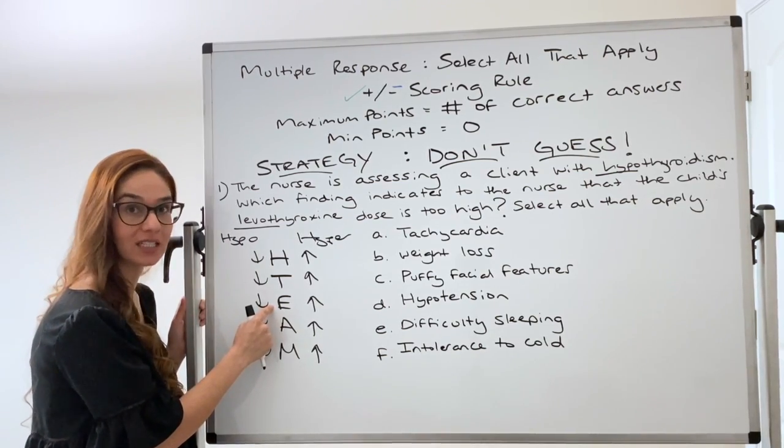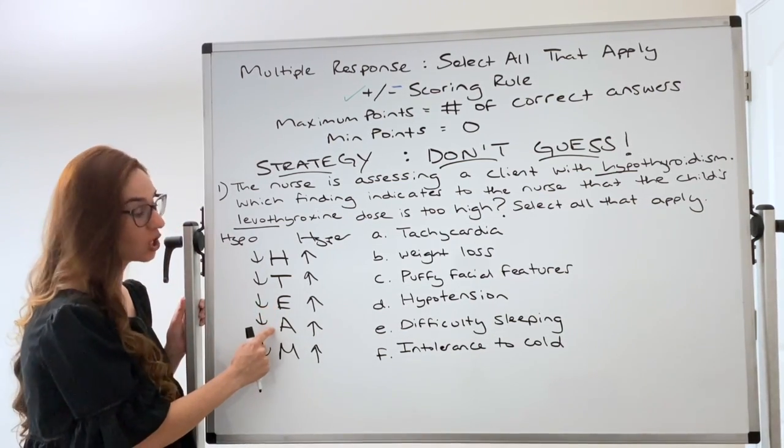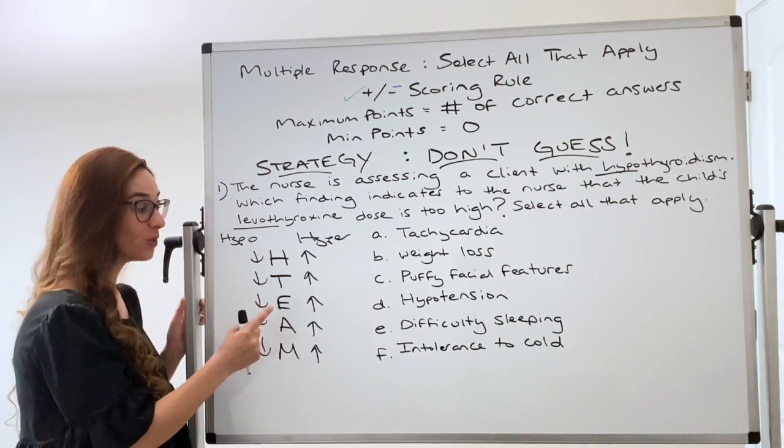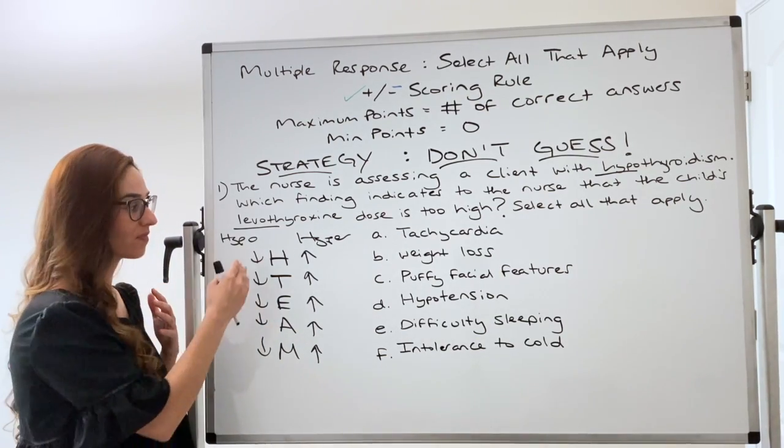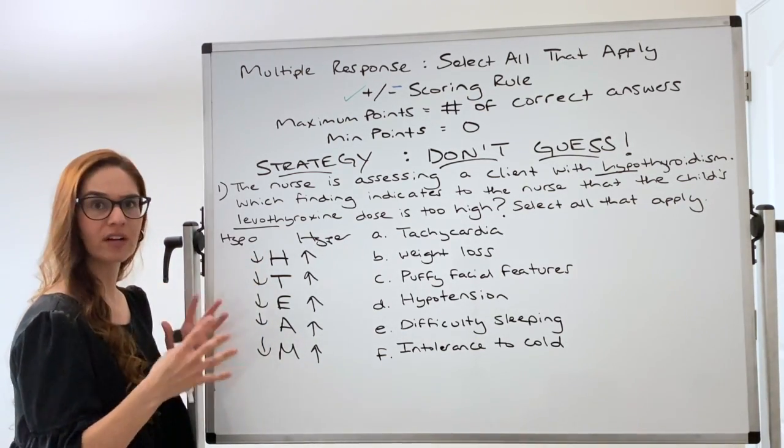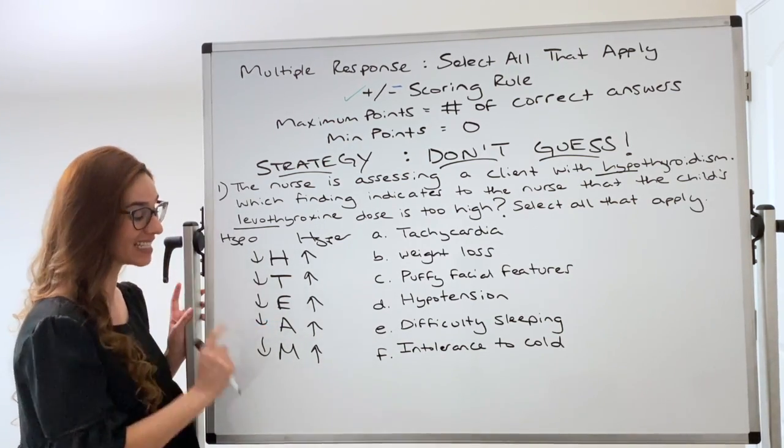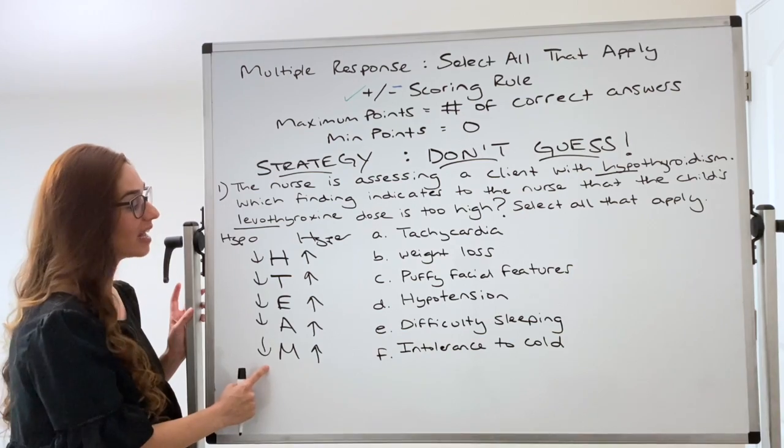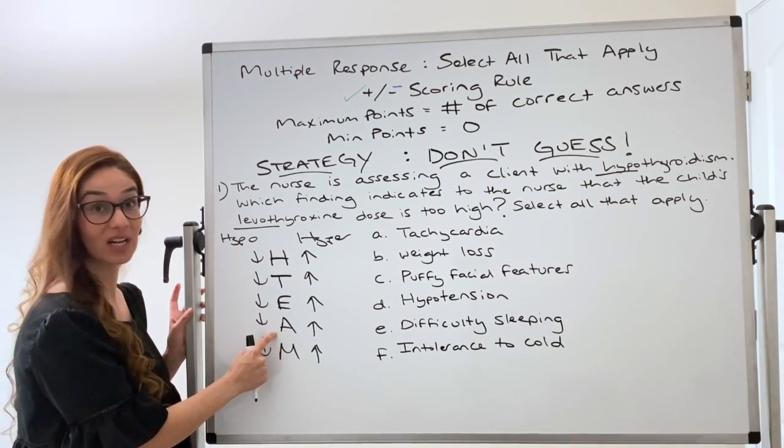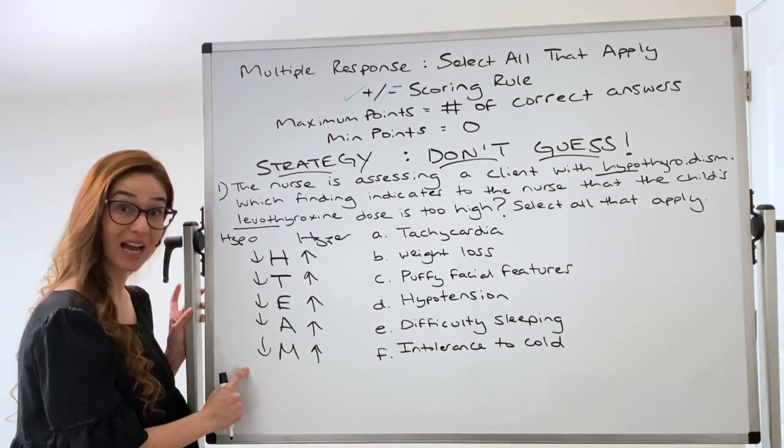So hypothyroidism: low heart rate, low temperature, they're always cold, low energy, they're very tired, fatigue, lethargic, decreased appetite. You would think with lowering heart rate and all those things you think appetite would increase. No, they have decreased appetite and decreased metabolism. That's why even though they're not eating much they're gaining weight. Their metabolism has decreased.